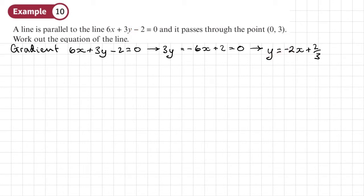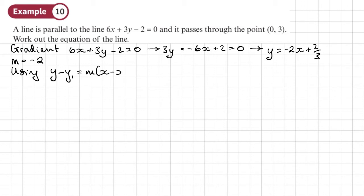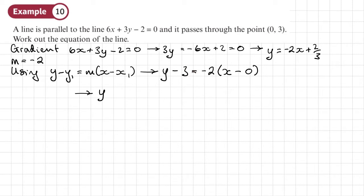So m equals negative 2. We want to find the equation of a line with this gradient that passes through the point 0, 3. Using y minus y1 equals m times x minus x1, we have y minus 3 equals negative 2 times x minus 0. It doesn't say which form to leave it in, so I'll leave it in the form y equals mx plus c. So we have y equals negative 2x plus 3.